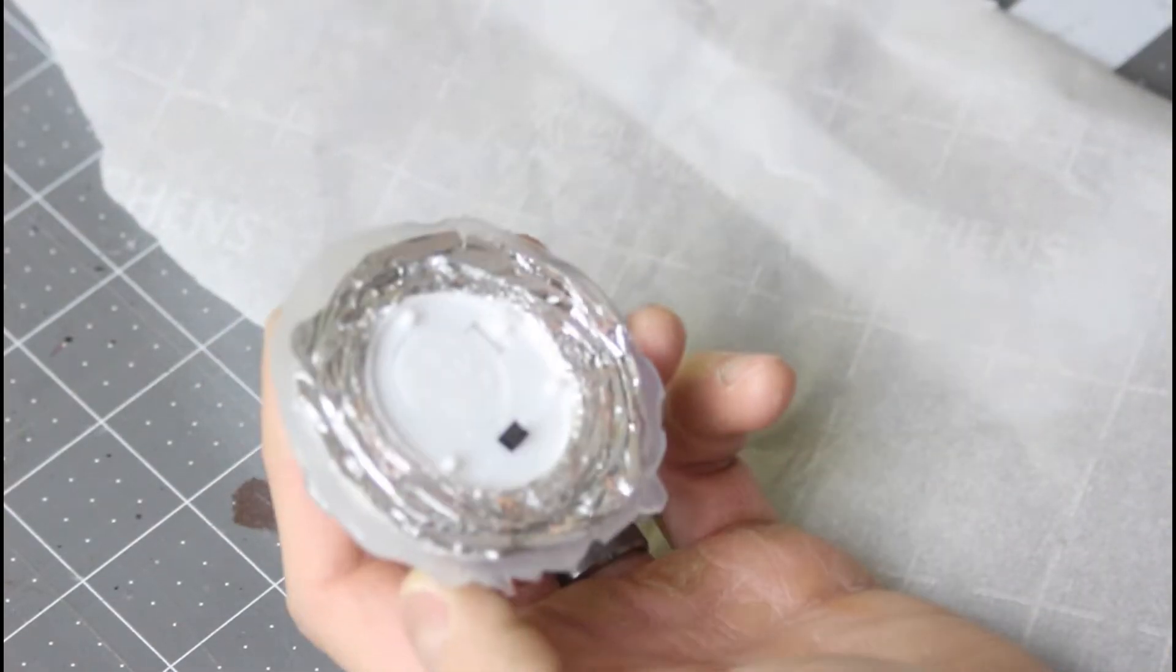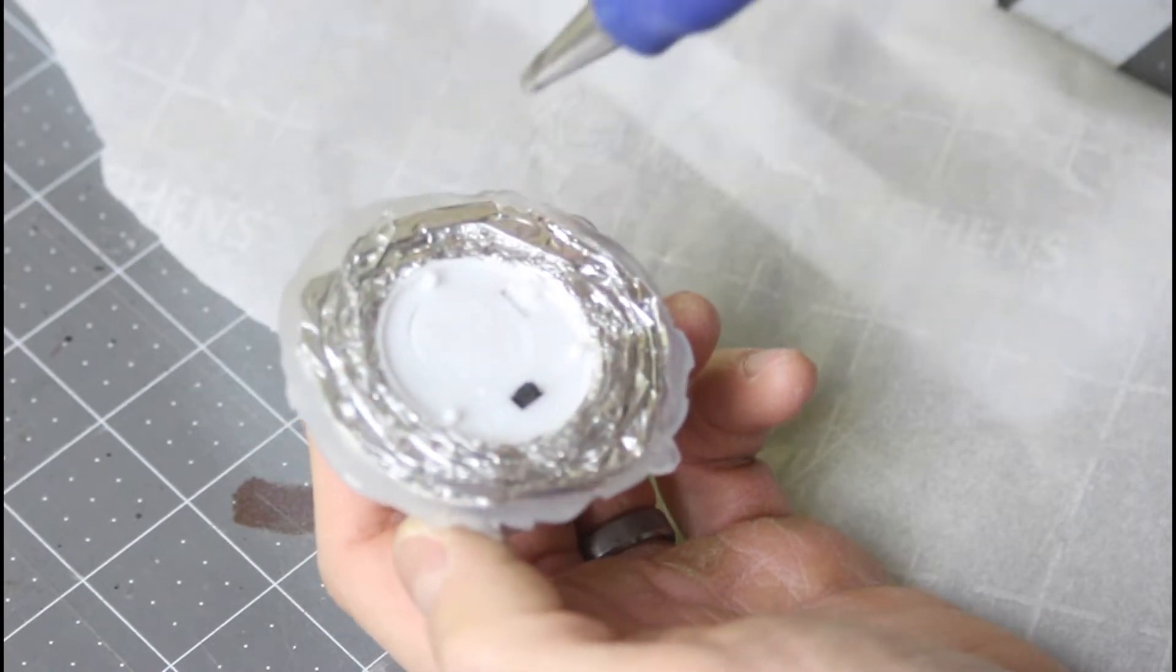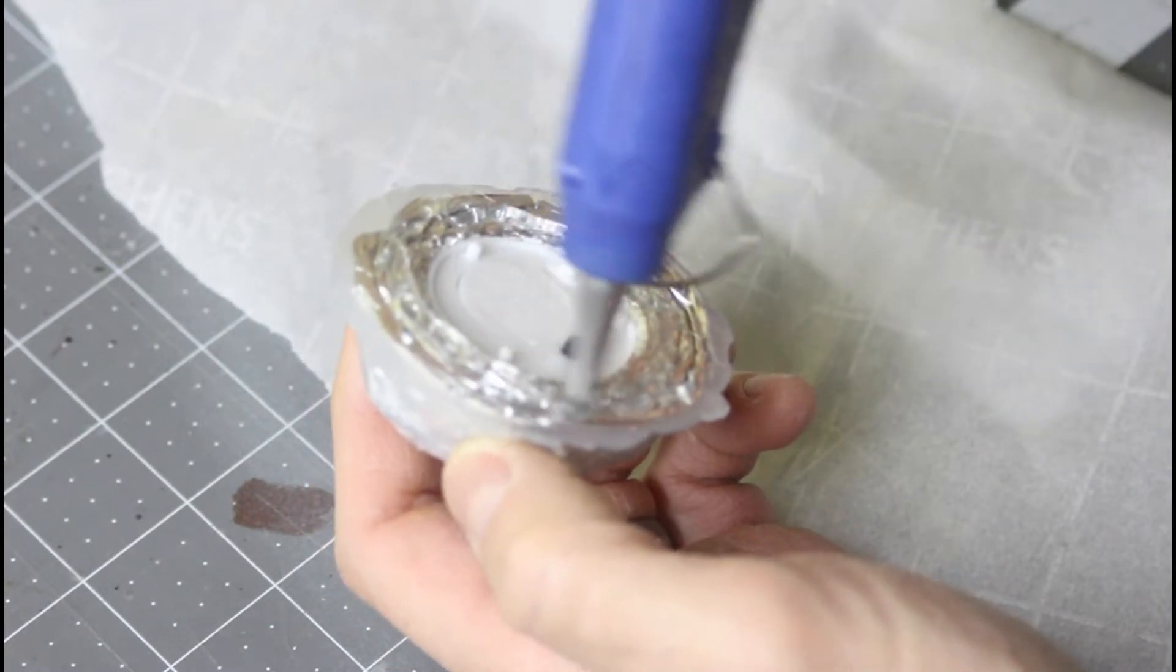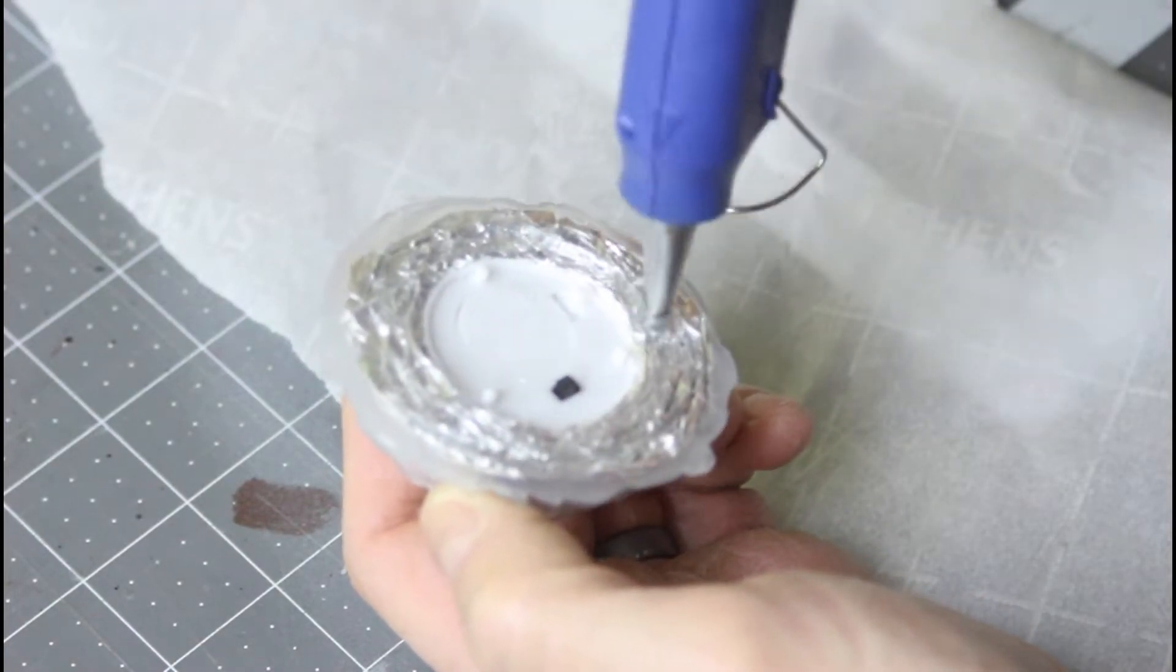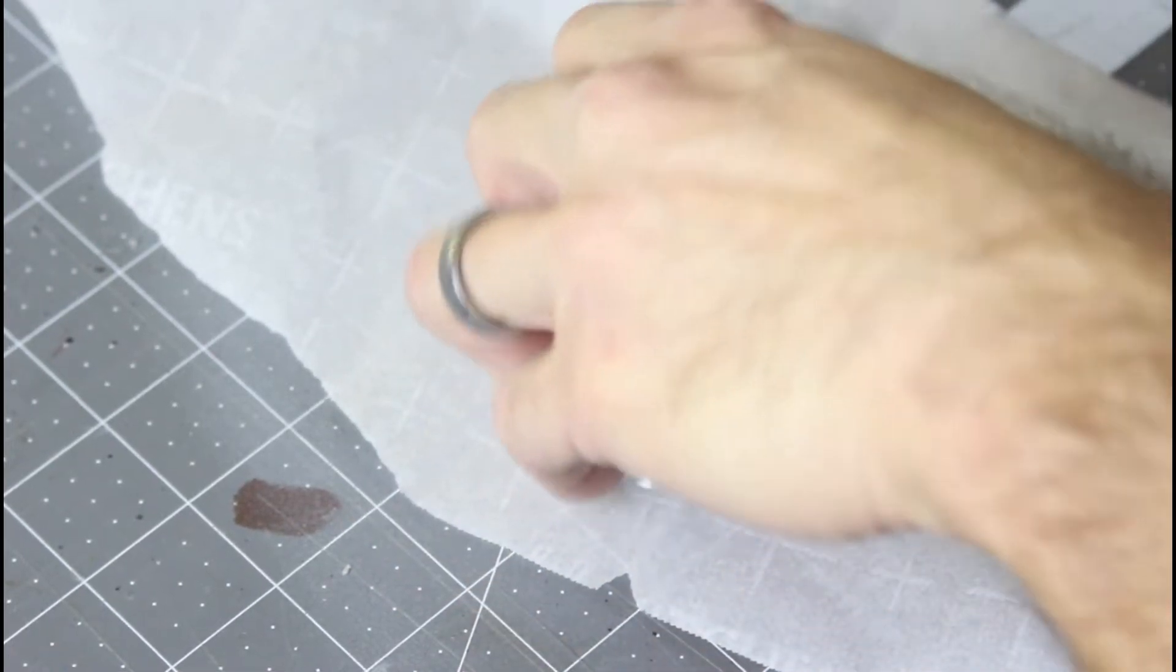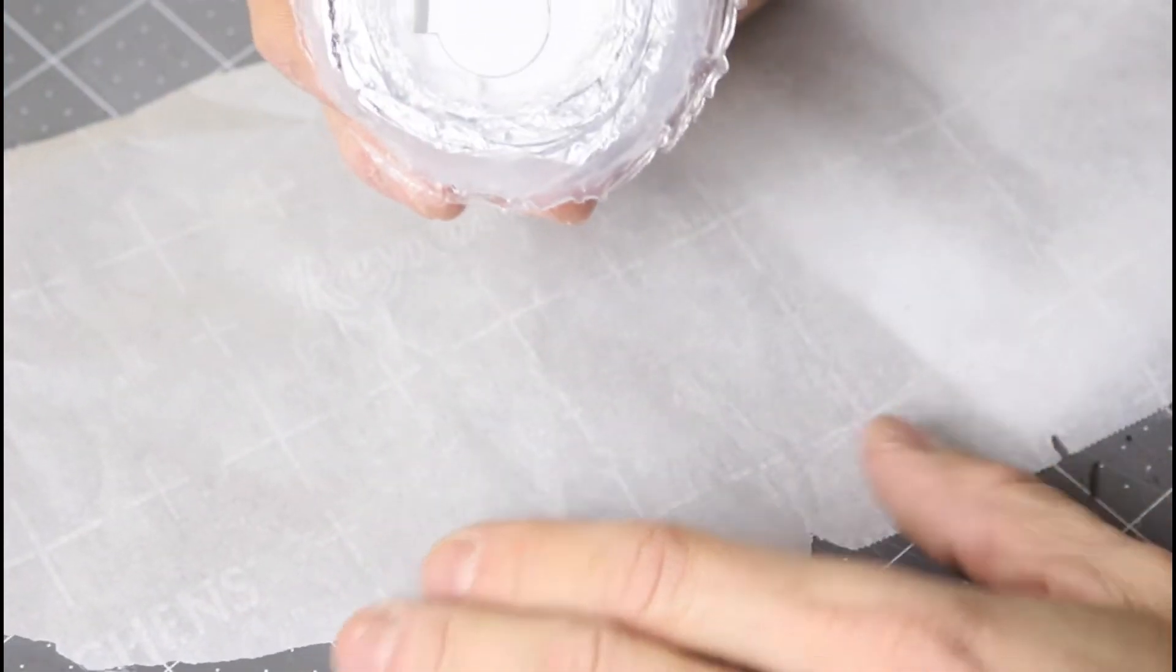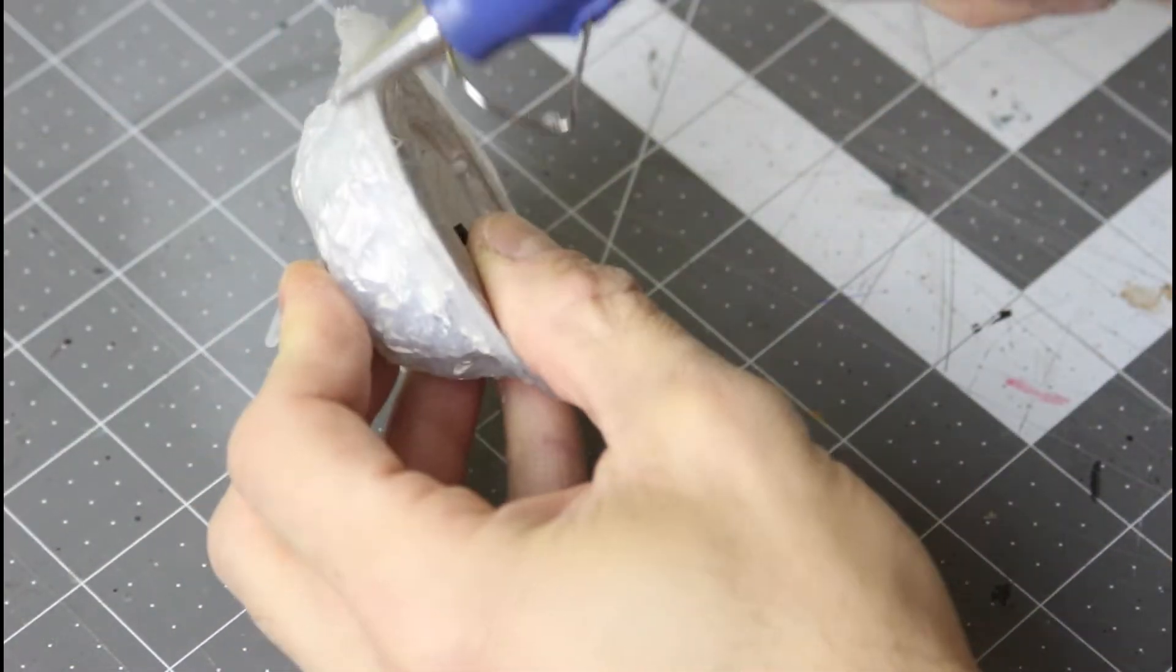And then once that cools, you're going to take more hot glue and put a little strip around the bottom of the aluminum foil so that it kind of melts into the rest of the base. So it'll be a nice, solid piece of glue basically for the fire. You don't want to go too crazy here because you don't want the glue to smear into the tea light.